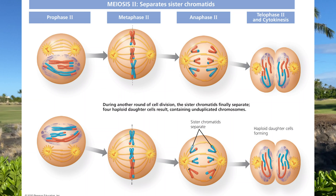In prophase 2, the spindle apparatus reforms, attaching again to the chromosomes at the kinetochore. During metaphase 2, the chromosomes are positioned at the metaphase plate. Note that because of crossing over in prophase 1, the two sister chromatids of each chromosome are not genetically identical. During anaphase 2, there's a breakdown of proteins holding the chromosomes together, allowing them to separate, and the microtubules shorten, dragging the chromosomes to opposite poles. In telophase 2, cytokinesis occurs and the daughter cells divide.